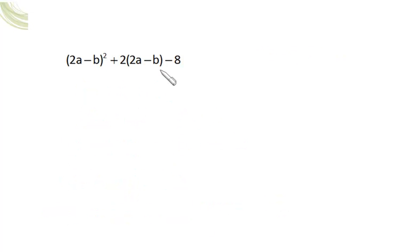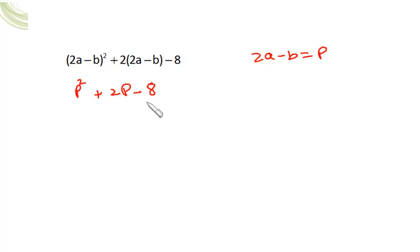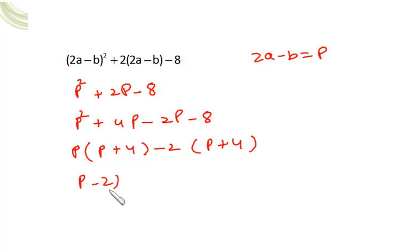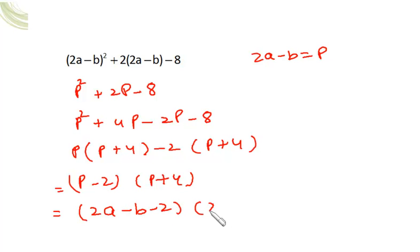For (2a-b)²+2(2a-b)-8: let p = 2a-b, so it becomes p²+2p-8. Product should be -8 and sum should be +2. Choosing 4 and -2: 4×(-2)=-8 and 4+(-2)=2. This gives (p+4)(p-2). Substituting back: (2a-b+4)(2a-b-2).